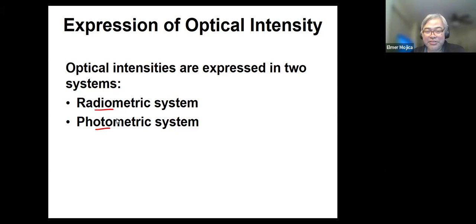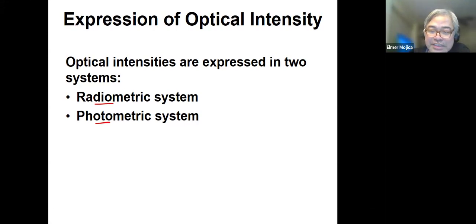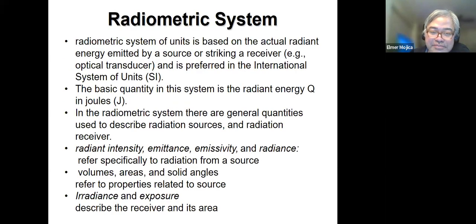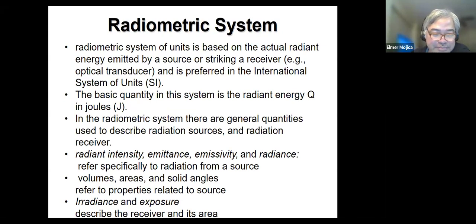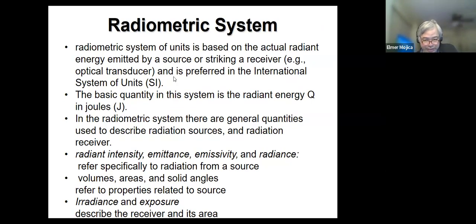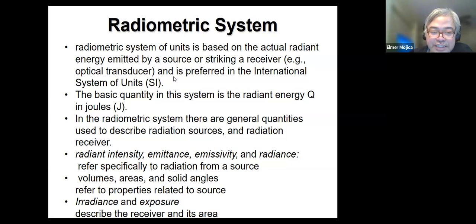In what way are they the same or different? Let's look at each of them. When we're talking about the radiometric system, it is an approach where radiometry is based on the actual radiant energy emitted by a source or striking a receiver — preferred in the international system of units. Between the two, the radiometric system is the one that is preferred.